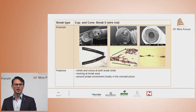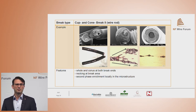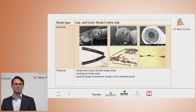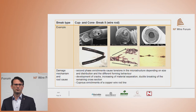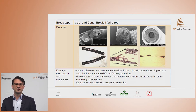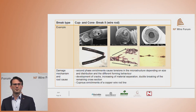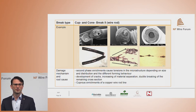Drawing die wear can also be the reason, or a drawing die which is clogged or blocked. The second cup and cone break is characterized by a hole and a cone at both break ends normally, and necking at the break area. What is clearly visible is second phase enrichment locally in the microstructure. The damage mechanism and root cause is this second phase enrichment, which causes tensions in the microstructure depending on the size and distribution of the second phases and their different forming behavior. The crack develops, separation of the material increases, and in the end there is a ductile breaking of the remaining cross section. The root cause is definitely the cuprous enrichment of a copper wire rod line.